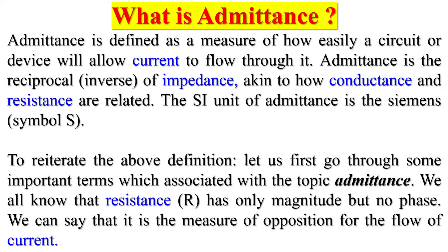What is admittance? Admittance is defined as a measure of how easily a circuit or device will allow current to flow through it. Admittance is the reciprocal inverse of impedance, analogous to how conductance and resistance are related. The SI unit of admittance is the Siemens, symbol S. Let us first go through some important terms associated with the topic of admittance.